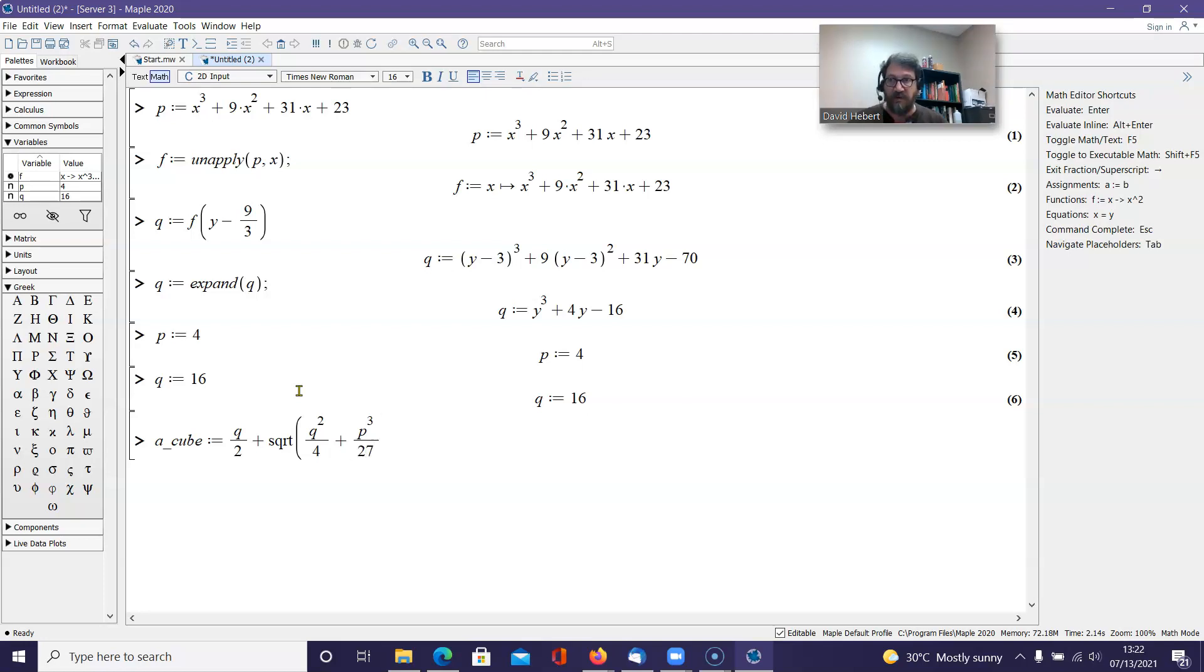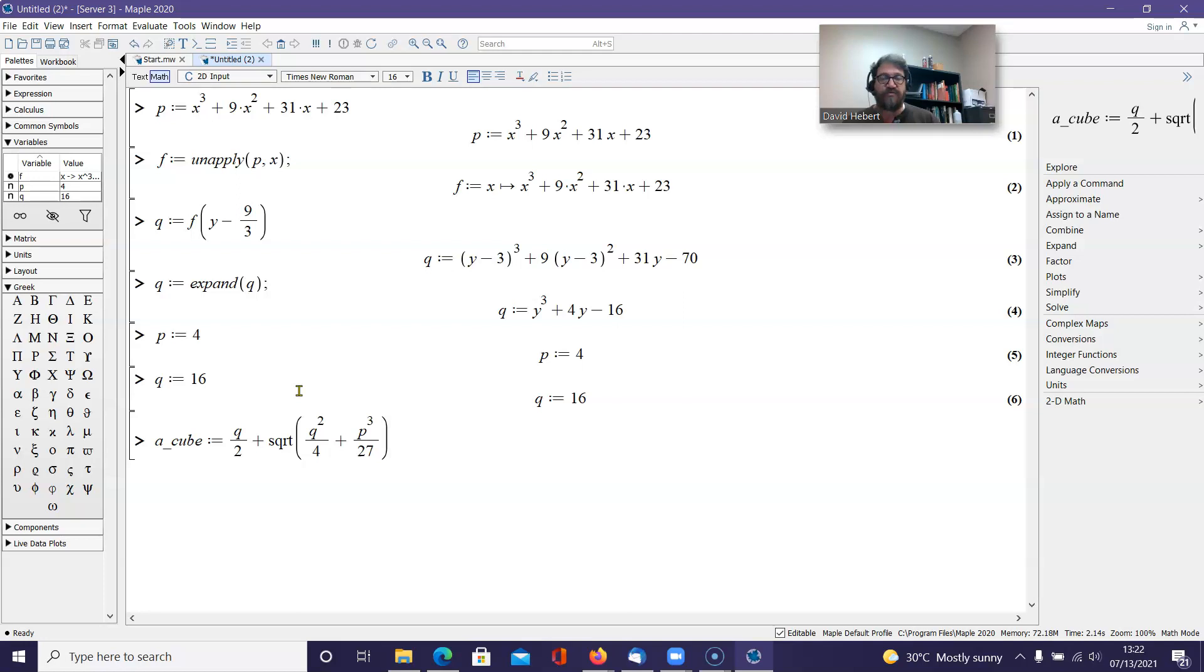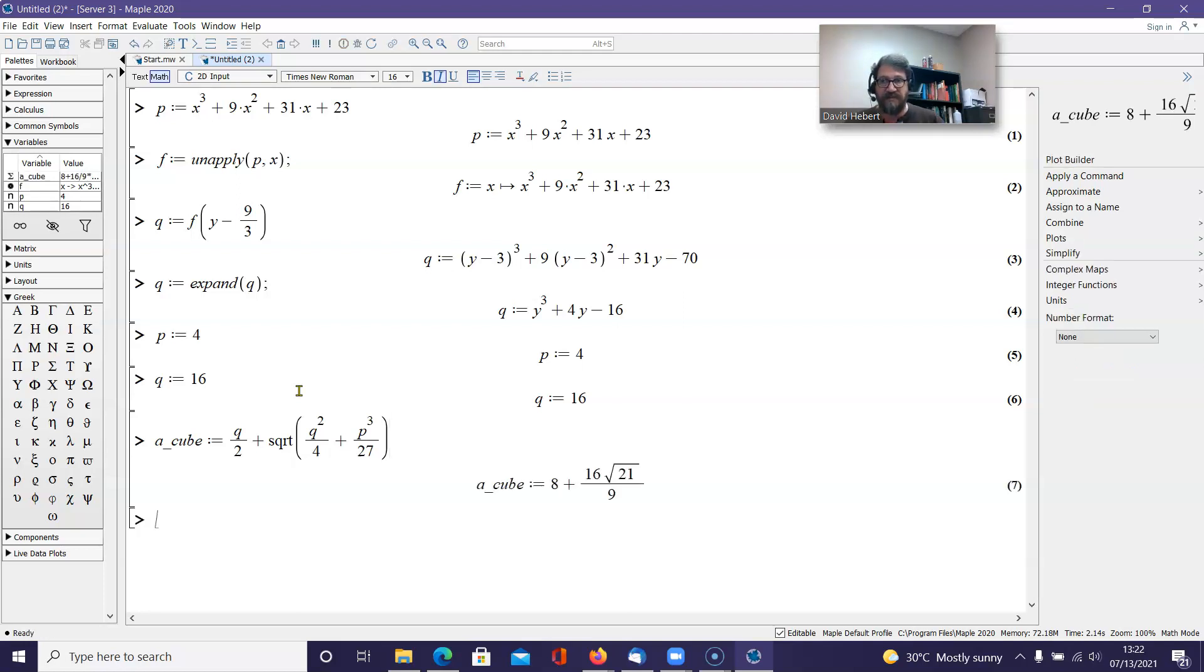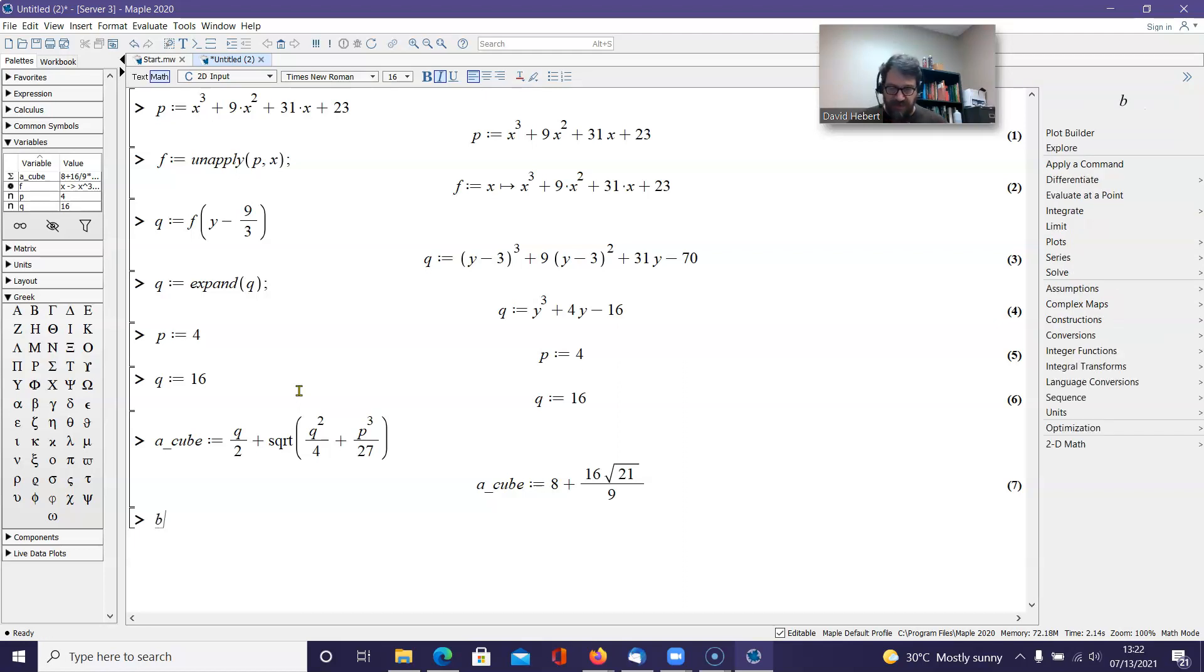And to that, we're adding p cubed divided by 27. And we're going to close our parentheses. What's really nice about Maple is it does the substitutions. So I can see what a cubed is. It's actually a number.